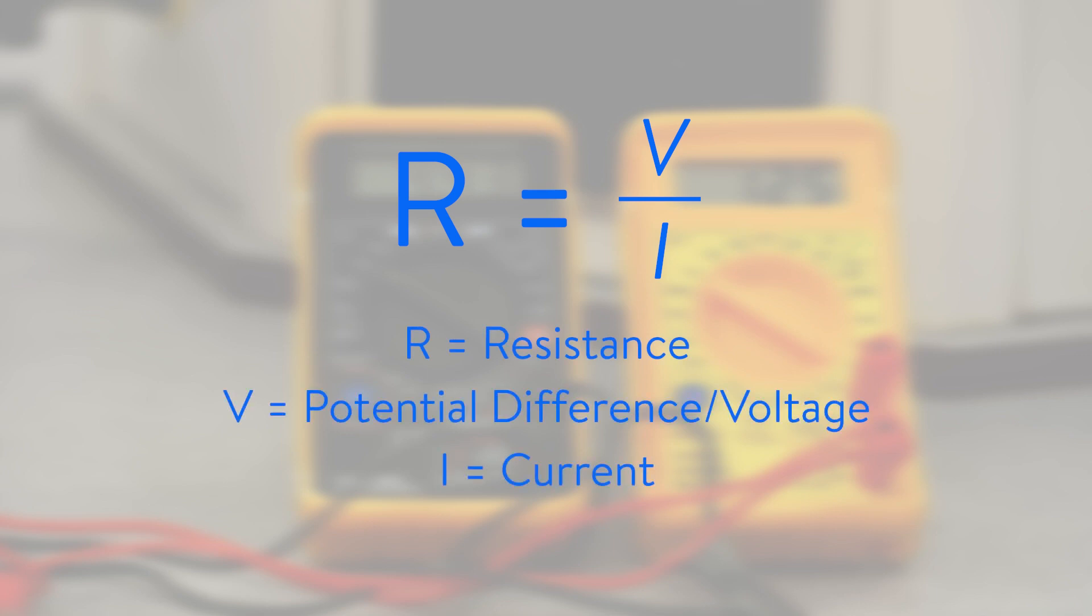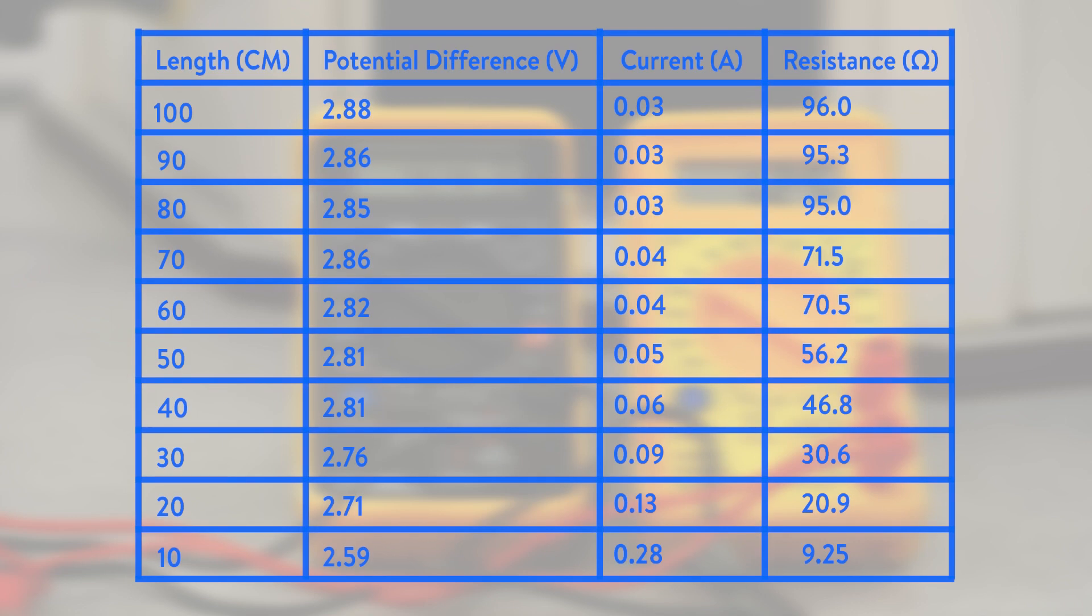Using the equation R equals V divided by I, where R equals resistance and V is potential difference or voltage and I is the current, work out the resistance of the wire along the 1 meter length.